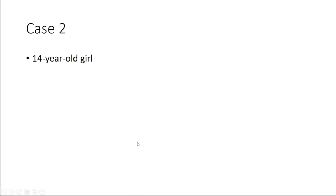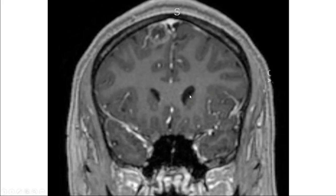Case 2 is a 14-year-old girl with a dural-based mass. Preoperatively, it was thought to be a meningioma — it had a few atypical imaging features but was durally based. You can even see the dural tail, which you hear about regarding meningioma, but it can be seen with essentially any dural-based mass. It was in a difficult position close to the sinus, making resection very challenging.